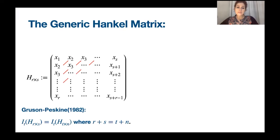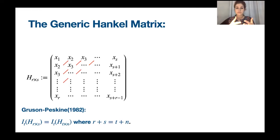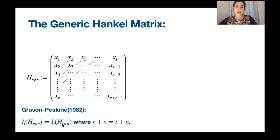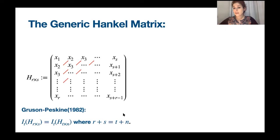One good property, first proved by Grayson-Peskin, is that Hankel matrices have what I call elasticity: when working with the determinantal ideal — the ideal generated by all t-by-t minors of the r-by-s Hankel matrix — this is exactly equal to the ideal of t-by-t minors of the Hankel matrix of size t-by-n. So as long as you preserve the number of variables, you can change the size of the matrix and the determinantal ideals remain the same.